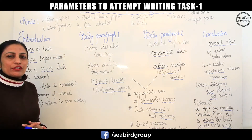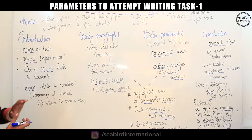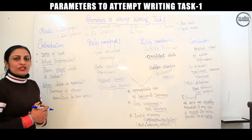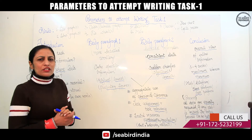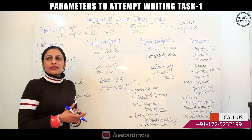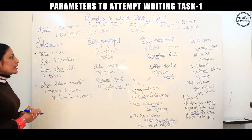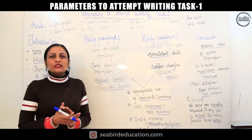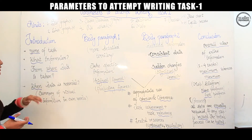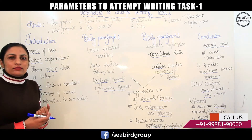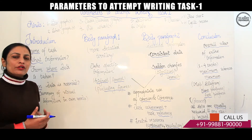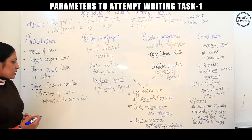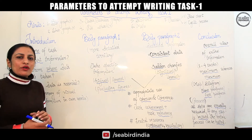Definitely you will start writing with your introduction — make sure it should be very clear. The first parameter to write an introduction is the name of the task. Out of the seven task types, the name can be one. Try not to change the name of the task — some students may know it can be called 'linear' but try to write it as 'line graph' only. After that, you have to mention what information is given in your task, such as number of people or number of smokers in a city or country. The third parameter is from where the data is taken — the name of a country or place will be given in your task. The last parameter will be when the data is recorded — from which time period to which time period. The summary of visual information should be written in your own words.